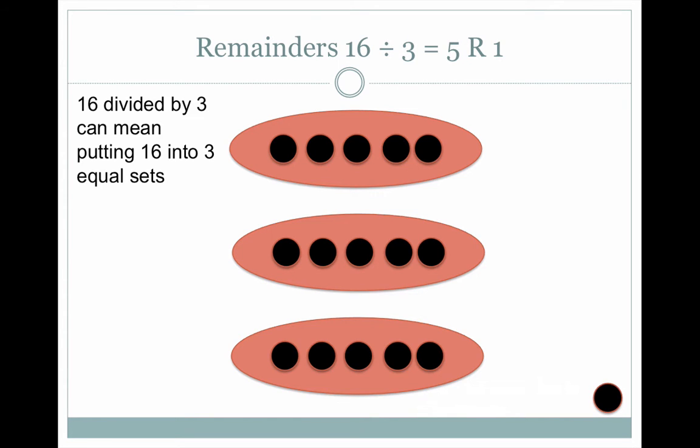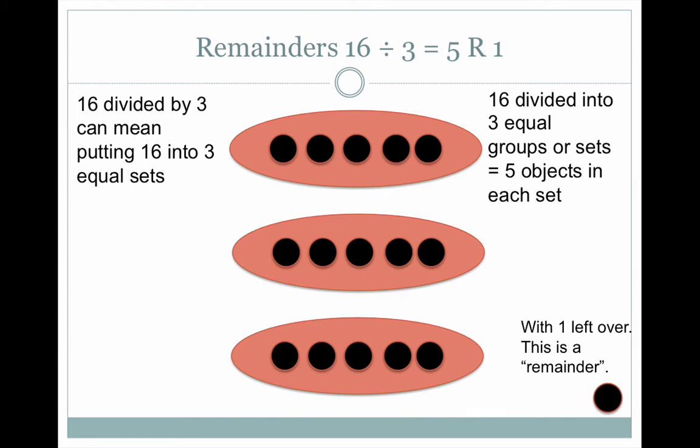Sixteen divided by three can also mean putting sixteen into three equal sets, which gives us five objects in each set and one left over. This is the remainder.